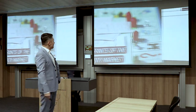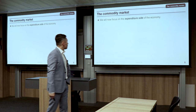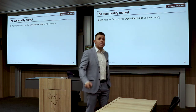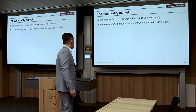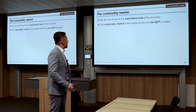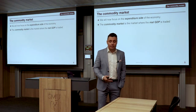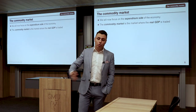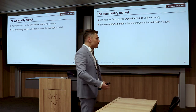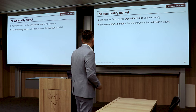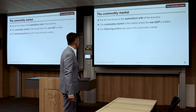Participants of the commodity market. The commodity market examines the expenditure side of the economy. It is a market where real GDP is traded — produced, consumed, invested, saved, and so on. Let's see a brief outline of what is going on in this market.